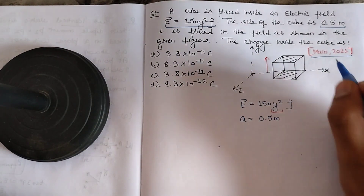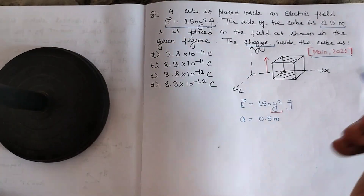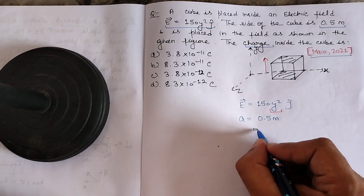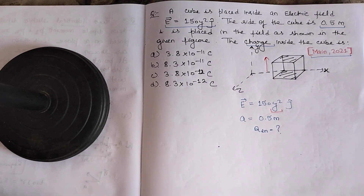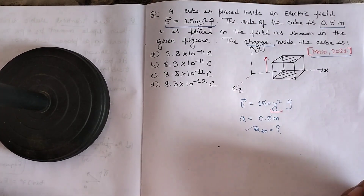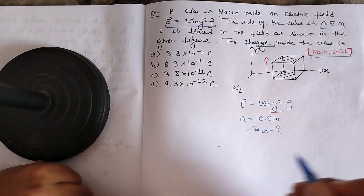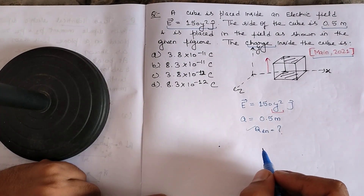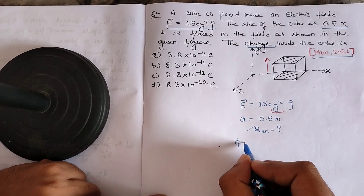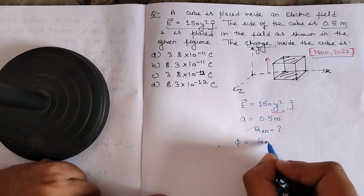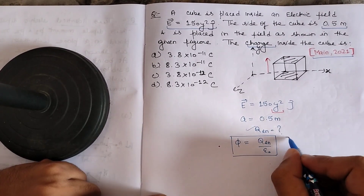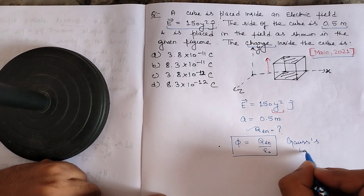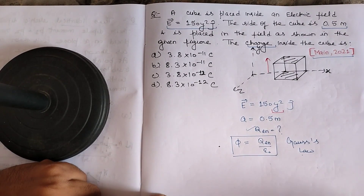We have been given the figure. The question asks about the charge enclosed inside the cube. We can directly find it with the help of Gauss's law, which states that the flux through a closed surface is 1/ε₀ times the charge enclosed by that surface.